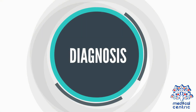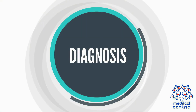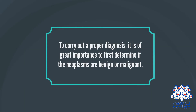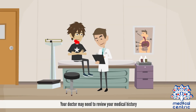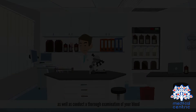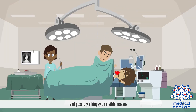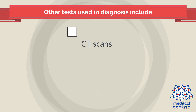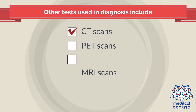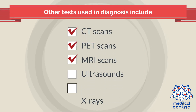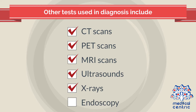Diagnosis and Treatment: To carry out a proper diagnosis, it is of great importance to first determine if the neoplasms are benign or malignant. Your doctor may need to review your medical history, conduct a thorough examination of your blood, and possibly a biopsy on visible masses. Other tests used in diagnosis include CT scans, PET scans, MRI scans, ultrasounds, x-rays, or endoscopy.